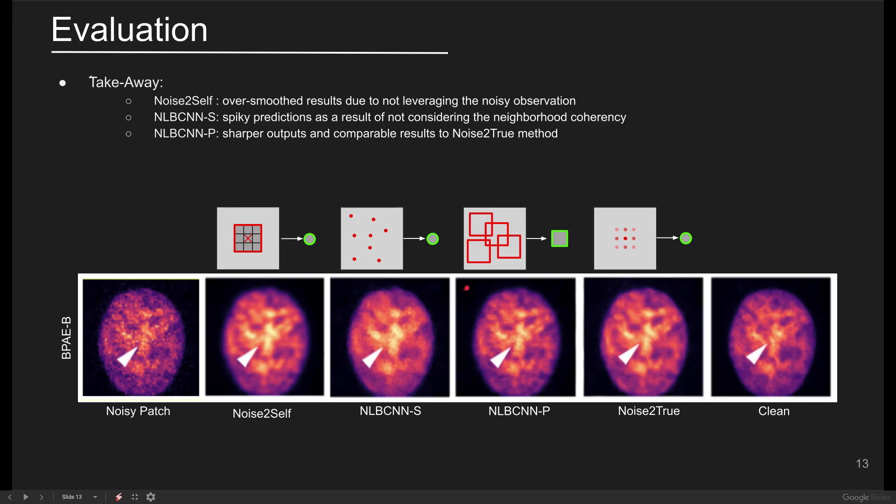In NLBCNNP, the non-local patches within the image are employed to estimate the denoised patch. As similar patches are likely to have similar appearances like edges, the spiky predictions can be alleviated and sharper patterns can be obtained compared to the noise-to-self.